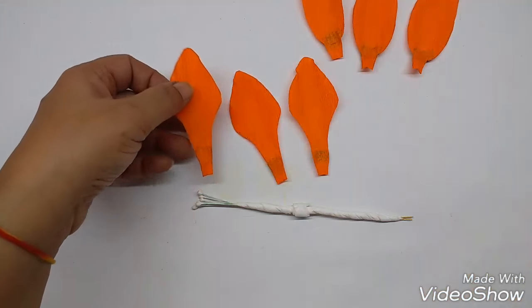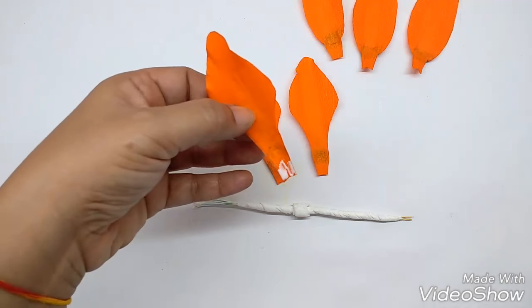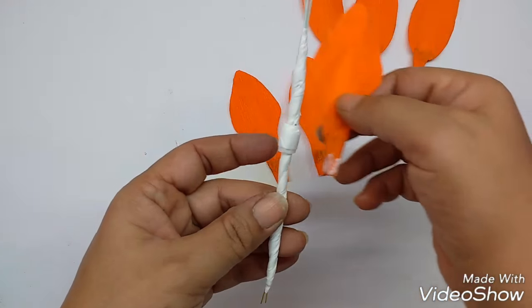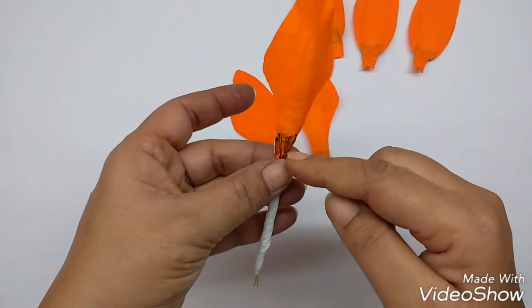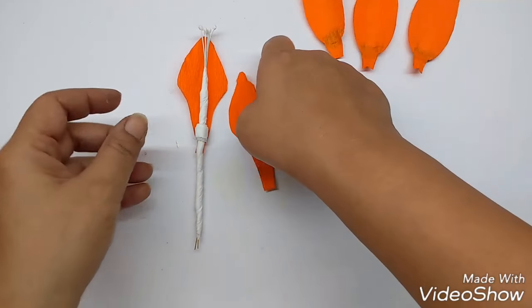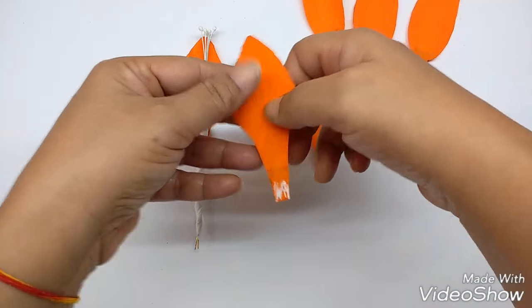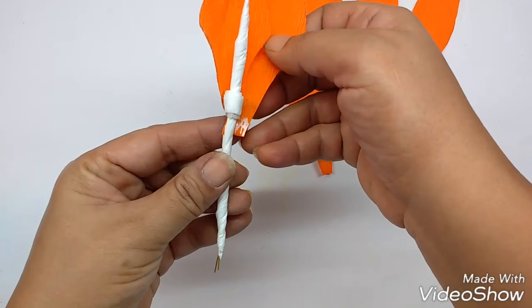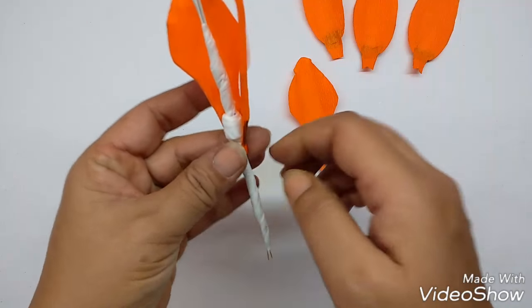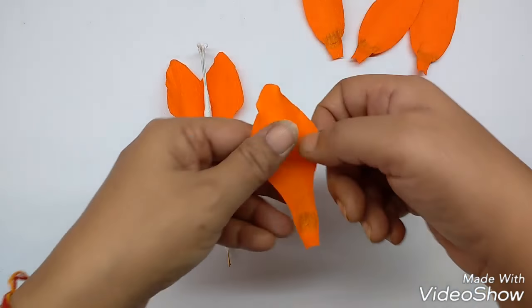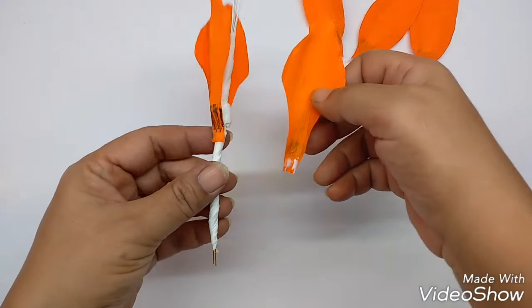So now take these shape petals. These are the inner petals. Apply glue on the base. And stick this below the roll that we have made. Press it hard. Do this with the other two petals also. Stick it next to the first one. Covering one third of the stem. And this will go in the gap that is left.